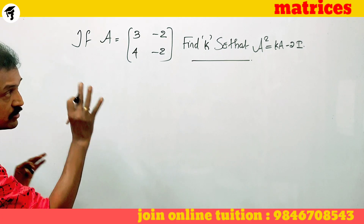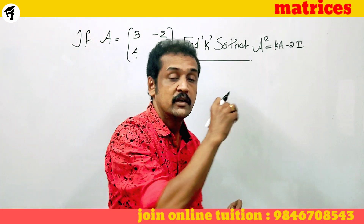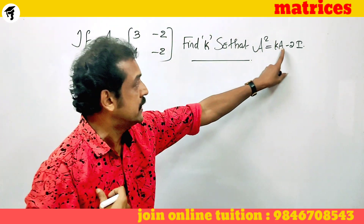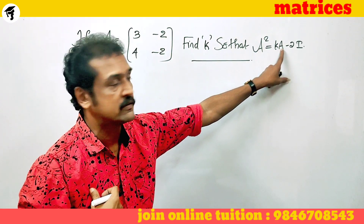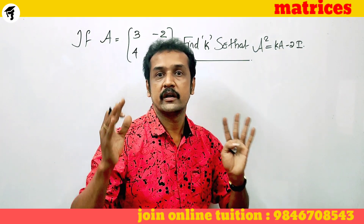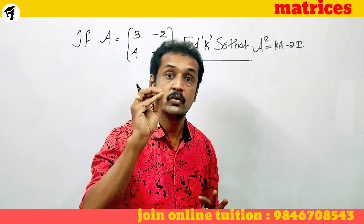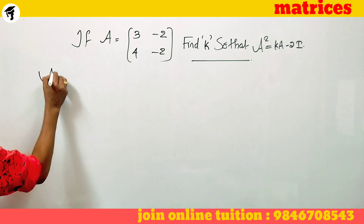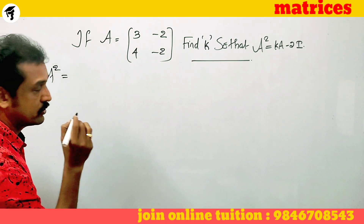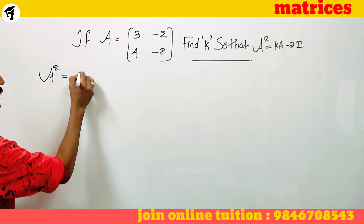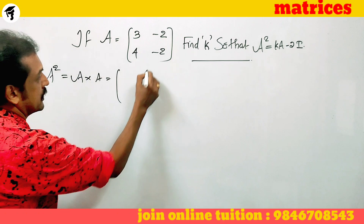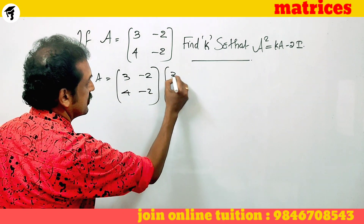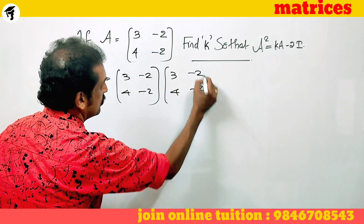If we satisfy that equation, we will have the same terms. We will compute A times A. The identity matrix I is [[1, 0], [0, 1]], which is a 2 by 2 unit matrix. Since A squared is not given, we first find A squared. A squared is A into A, and A is [[3, -2], [4, -2]], multiplied again by [[3, -2], [4, -2]].